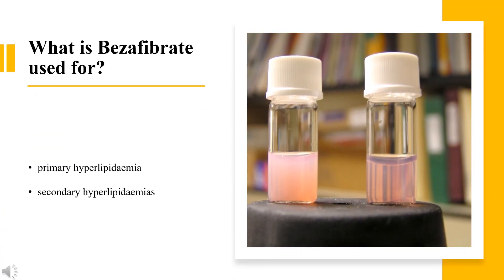What is Bezafibrate used for? For the treatment of primary hyperlipidemia types IIA, IIB, III, IV, and V (Fredrickson classification), corresponding to groups 1, 2, and 3 of the European Atherosclerosis Society guidelines, when diet alone or improvements in lifestyle such as increased exercise or weight reduction do not lead to an adequate response. Also for the treatment of secondary hyperlipidemias, e.g. severe hypertriglyceridemias, when sufficient improvement does not occur after correction of the underlying disorder, e.g. diabetes mellitus.